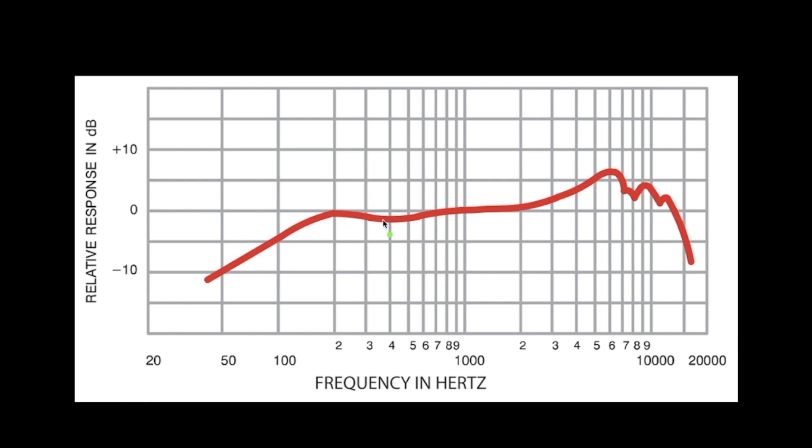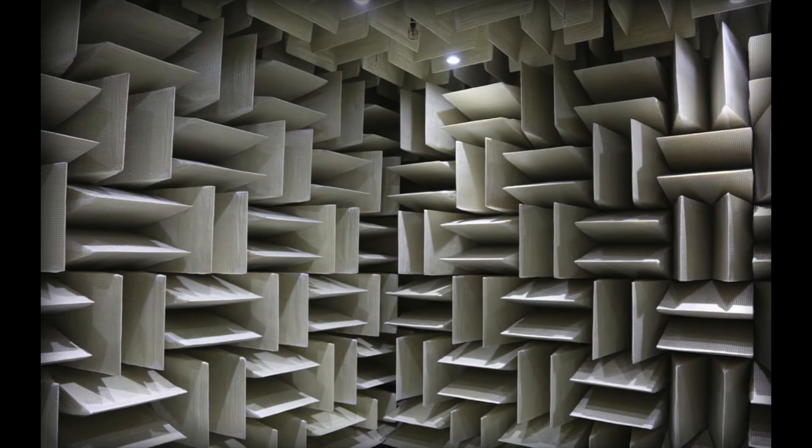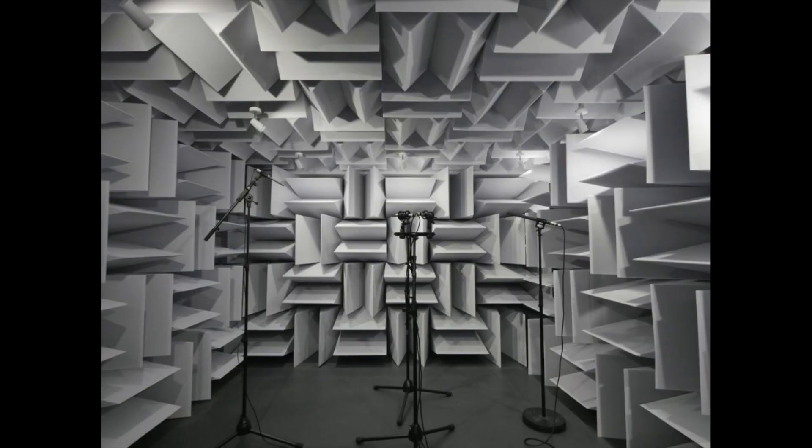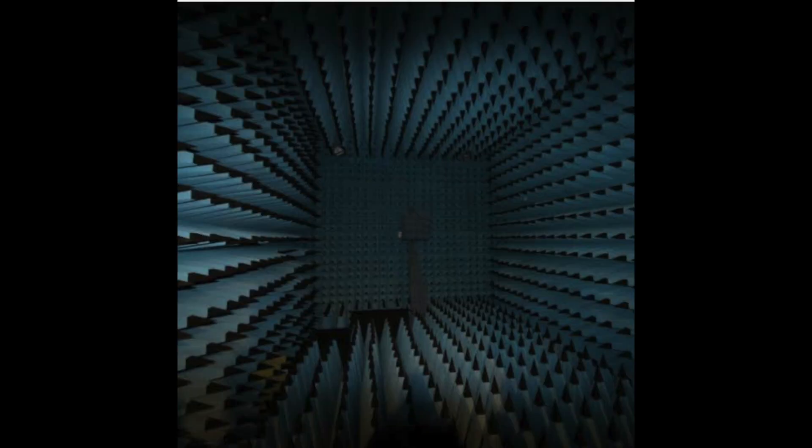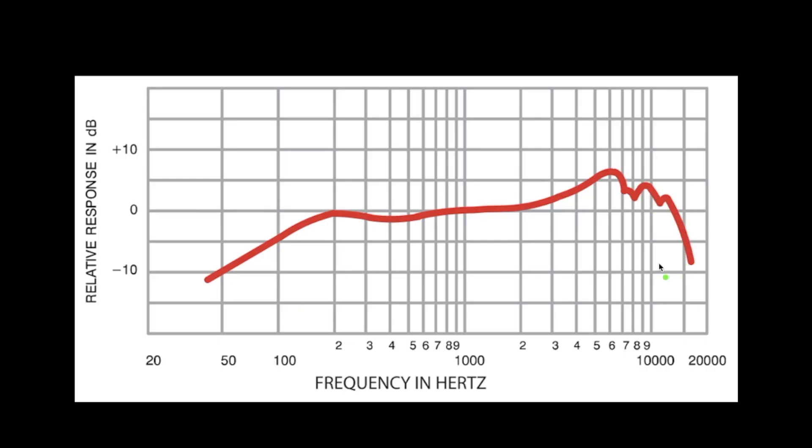Looking at this microphone frequency response chart, we see this red line here that's generated by the company that makes the microphone. I believe this is made by Shure. Basically, they put a microphone into an anechoic chamber, throw pink noise or white noise at it, and record the results of that test to generate this chart, which tells us how a particular microphone will respond at different frequencies.